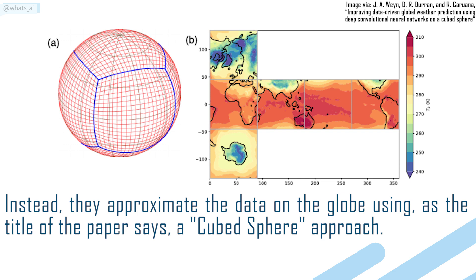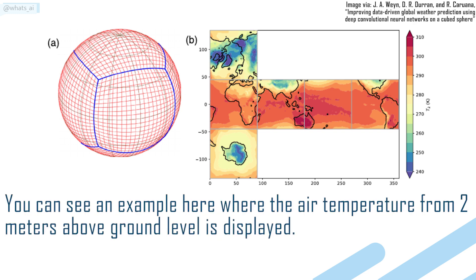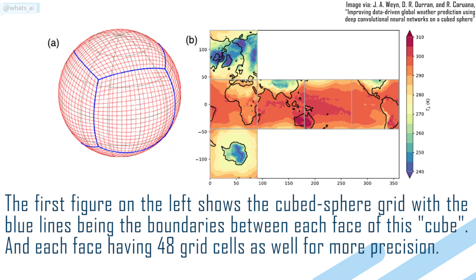Instead, they approximate the data on the globe using, as the title of the paper says, a cubed sphere approach. This is what the National Oceanic and Atmospheric Administration use in their global forecasting model. You can see an example here where the air temperature from 2 meters above ground level is displayed. The first figure on the left shows the cubed sphere grid, with the blue lines being the boundaries between each face of this cube, and each face having 48 grid cells as well for more precision.